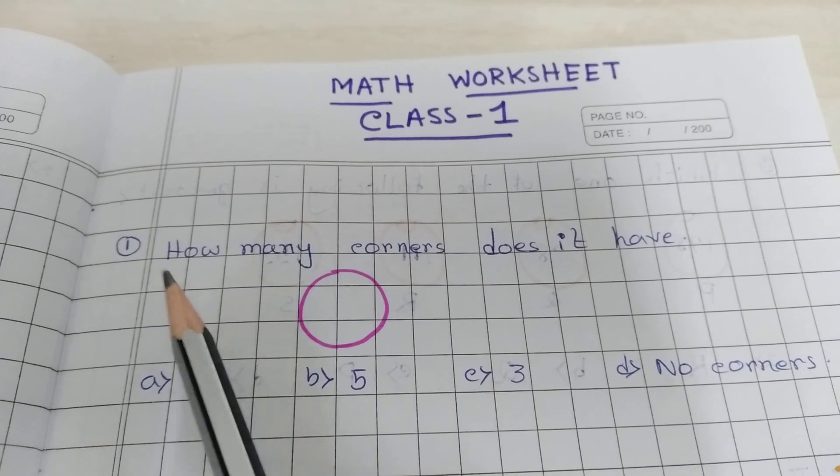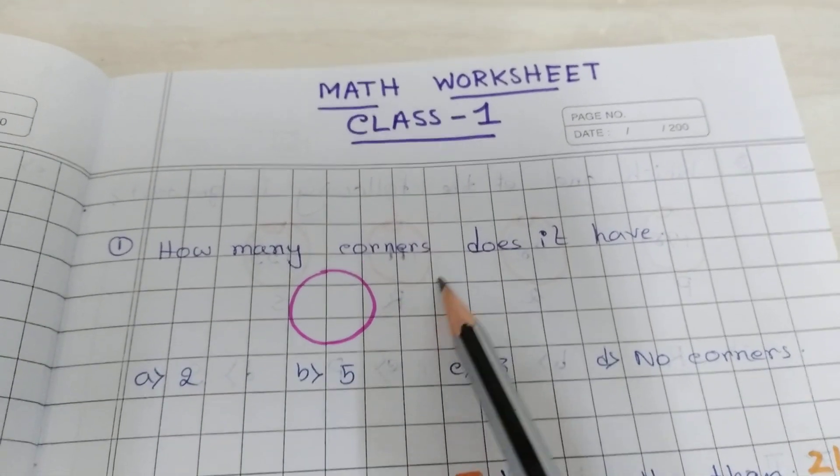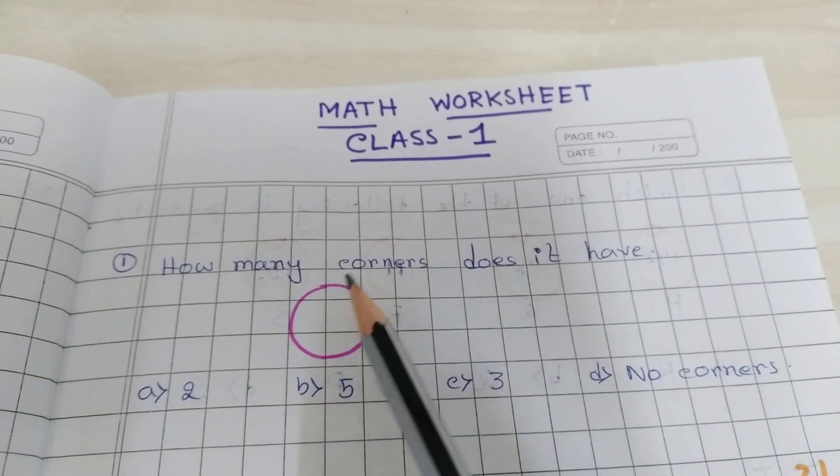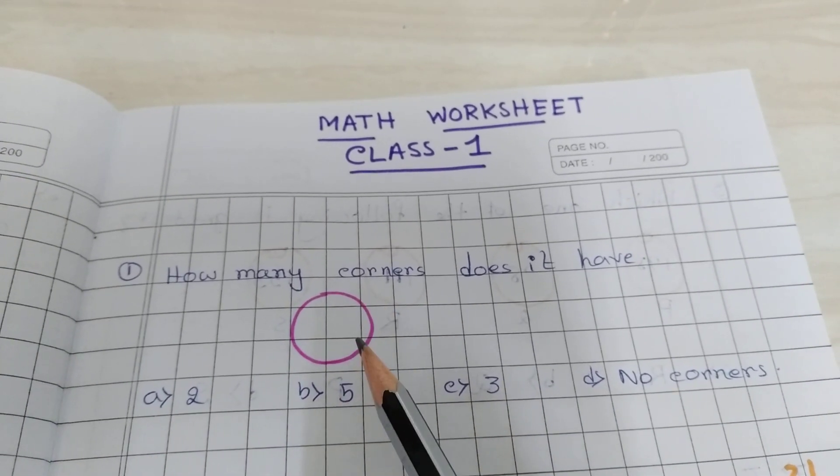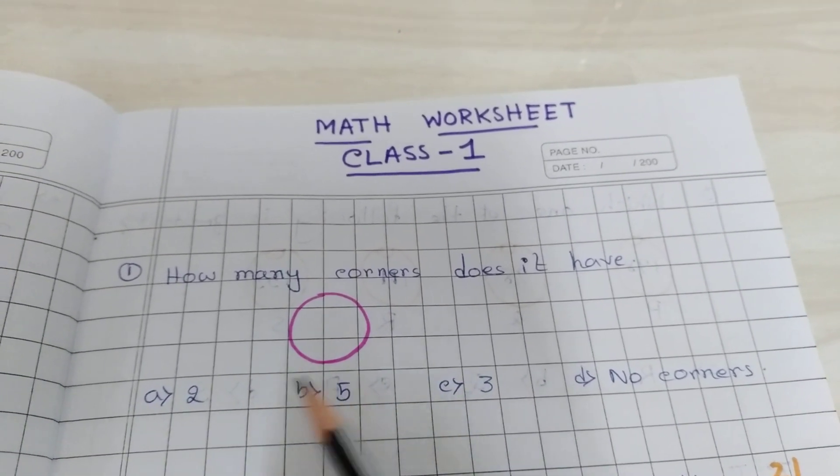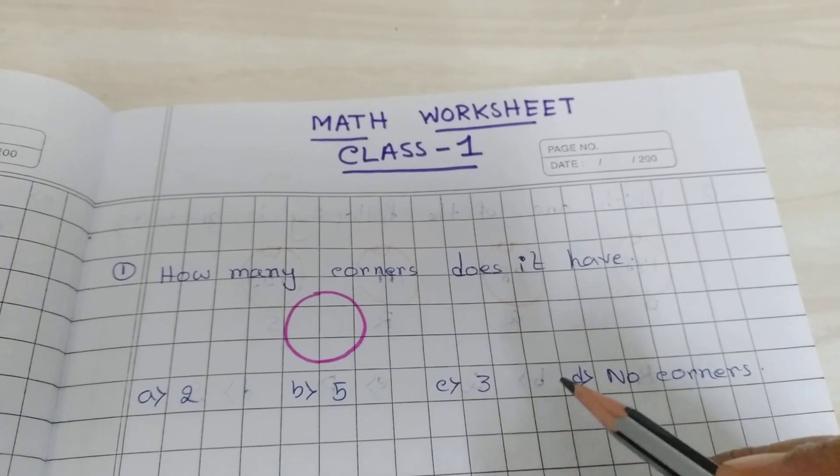First question is question number 1, how many corners does it have? This shape, how many corners it has? Circle, so no corners.